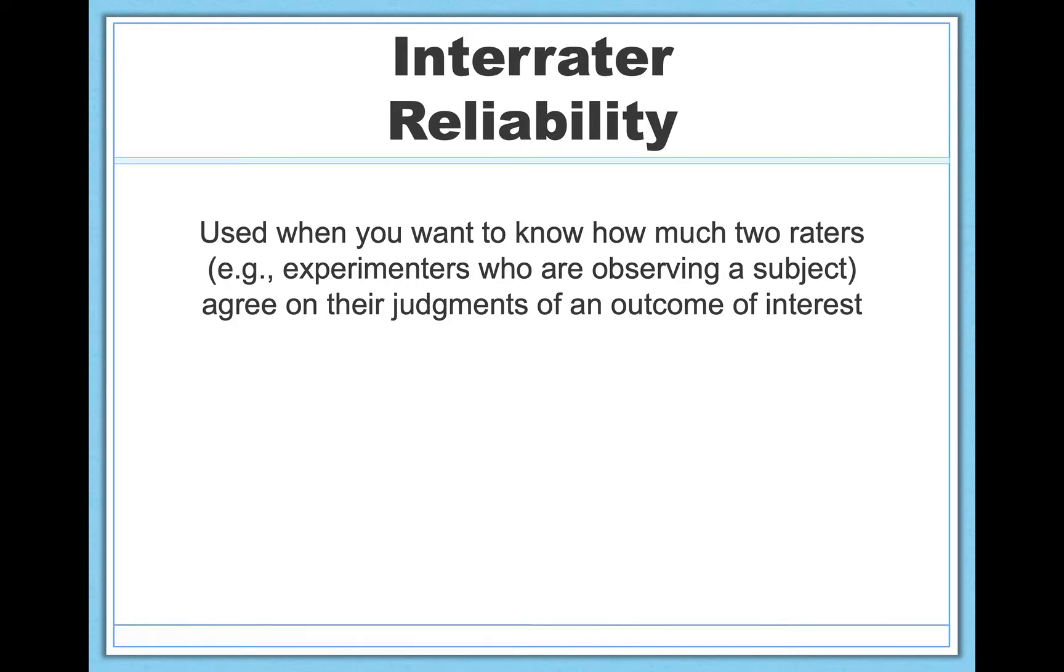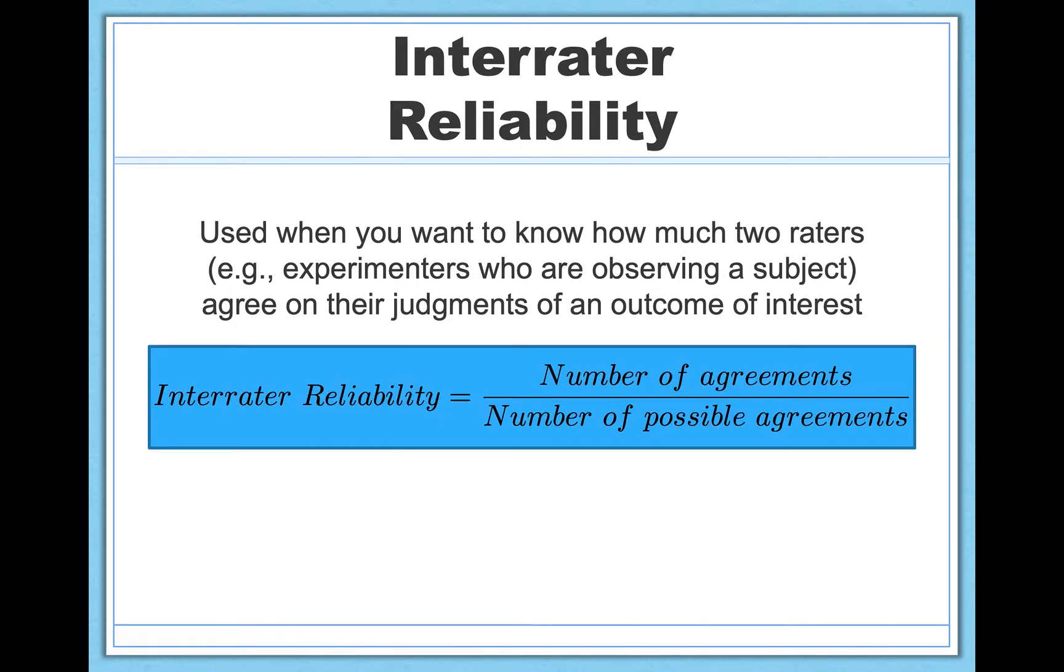So there is a formula for inter-rater reliability, and here it is. It's almost not necessary, though, because it's just a simple percentage of agreement. That's it. It's a proportion or a percentage of the number of times that the two experimenters or more are agreeing with one another. So it's inter-rater reliability equaling the number of times the experimenters agreed with one another divided by the number of times they could have possibly agreed if they were perfect. So this is the number of trials. And again, this is kind of a percentage.